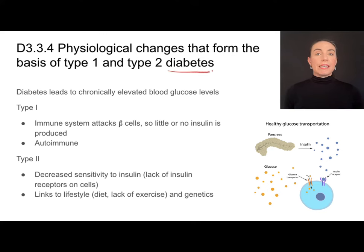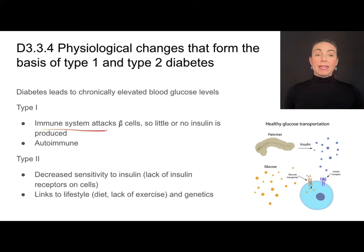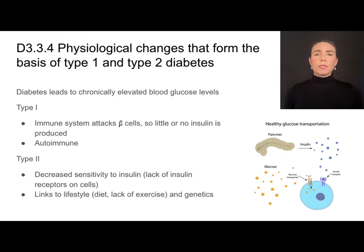Diabetes is a condition by which insulin and glucose control does not function properly. There are two types we're responsible for knowing about, and diabetes in general leads to chronically elevated blood glucose levels. Type 1 diabetes — previously called juvenile diabetes — is when the immune system attacks the beta cells. It is an autoimmune disease. Because the beta cells are dead or non-functioning, little or no insulin is produced. Type 2 diabetes occurs when someone is still producing proper levels of insulin, but there's decreased sensitivity to that insulin due to a lack of insulin receptors on cells.